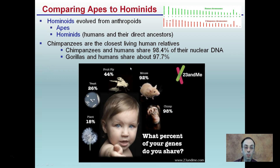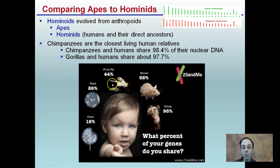We share 44% of our genes with the fruit fly, 26% with yeast, and 18% with a plant. So you can see there's still a fair amount of genetic overlap even with organisms that may be in completely different kingdoms.